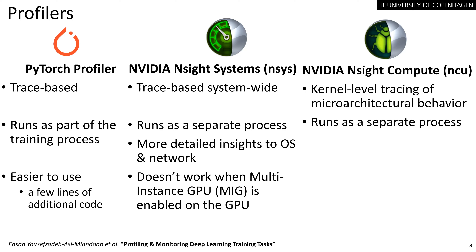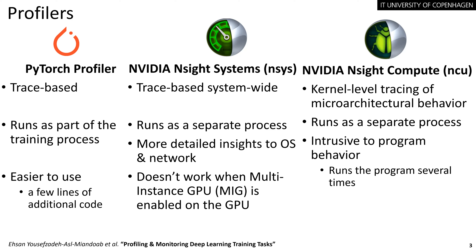NSYS provides more detailed insights into the operating system and network. The downside of NSYS is that it doesn't support MIG capability — Multi-Instance GPU — which is a new technology introduced by the Ampere architecture from NVIDIA, making it possible to split a large GPU into smaller GPU instances. NCU has an intrusive nature: it halts the execution of a program and reruns the whole application or its kernels several times to gather micro-architectural level information about the GPU under the execution of an application.